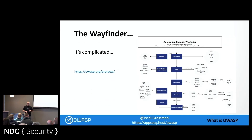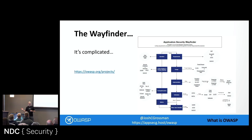One thing that OWASP does have on the website is something called the Wayfinder, which is supposed to help guide you — this is where I am in my development journey, or this is the type of problem I'm trying to solve, which projects might help me with that. But it's still a little bit complicated, so I'm going to highlight some that I think are particularly interesting, particularly useful, and not well-known.